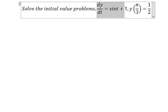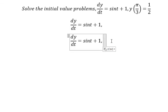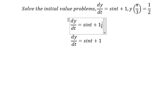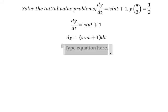We will put dt on the right, so we have sint + 1, everything multiplied by dt. Next we integrate both sides.